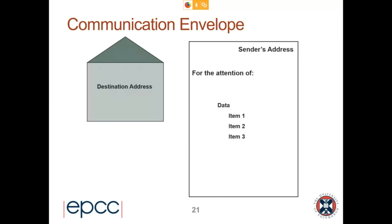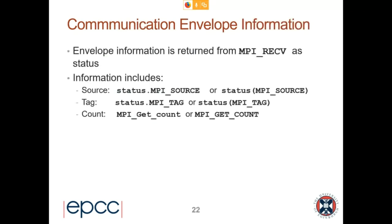If you wildcard, you can check the actual source and actual tag by examining the status parameter — in C that's a struct, in Fortran it's an integer array. This metadata is kind of like the envelope in which the message is contained — it has the sender's address, who it's for, and it contains data. The envelope information is returned as the status and includes the source, the tag, and a count.